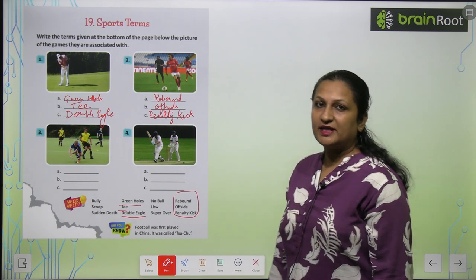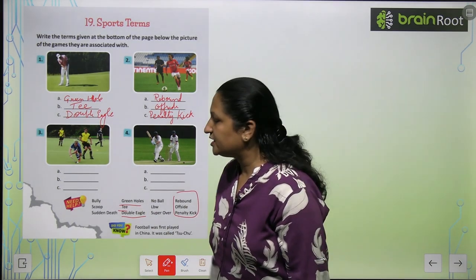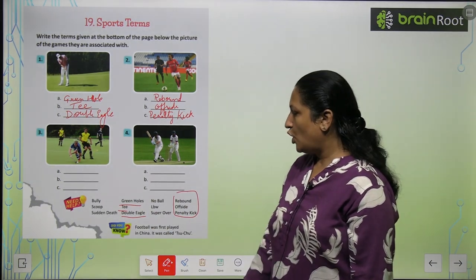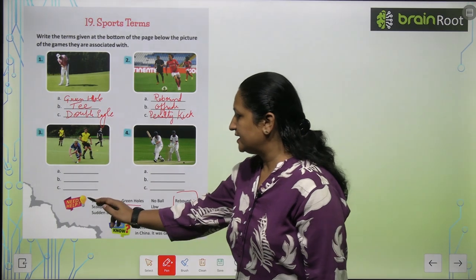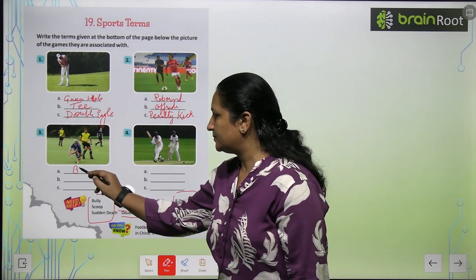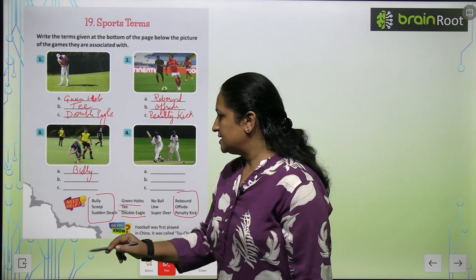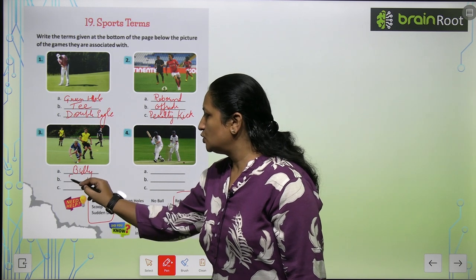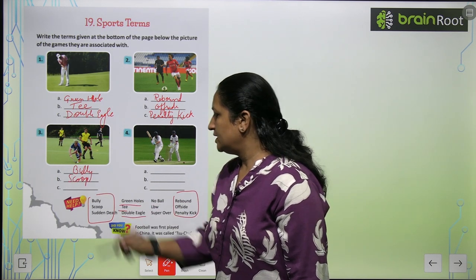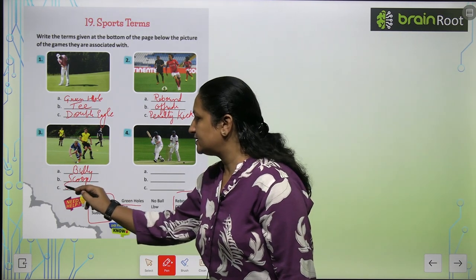In this game, what are you playing here? They are playing hockey. So we will write these words in hockey. First is bully, second is scoop, and third is sudden death.